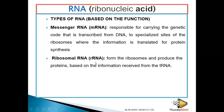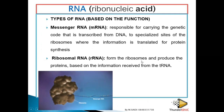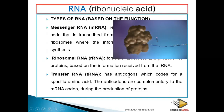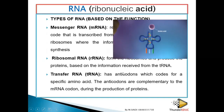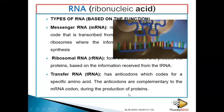Number two, ribosomal RNA forms the skeleton of the ribosome and produces proteins based on information received from transfer RNA. Number three, transfer RNA has what are called anticodons and codes for specific amino acids. It transfers amino acids from the cytoplasm and brings them to the ribosome so that a protein is formed.